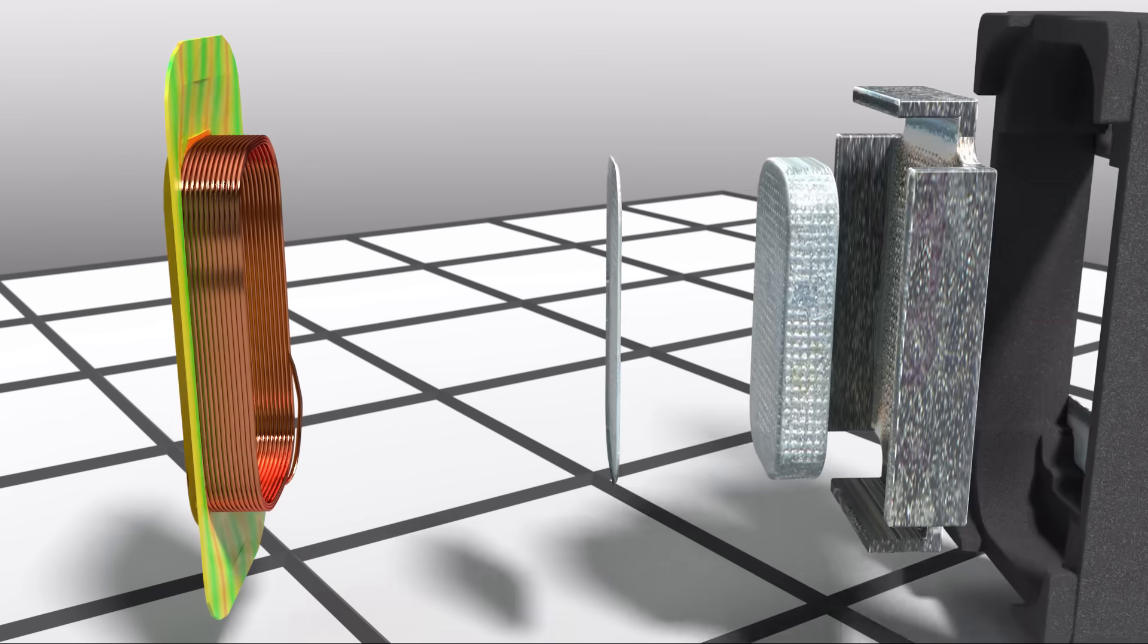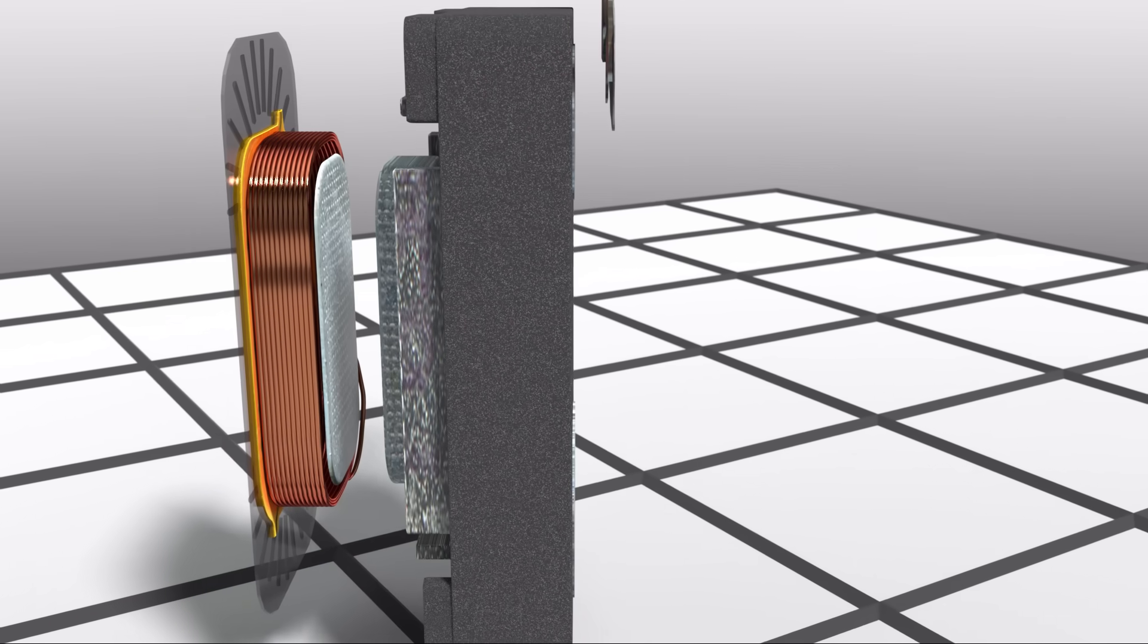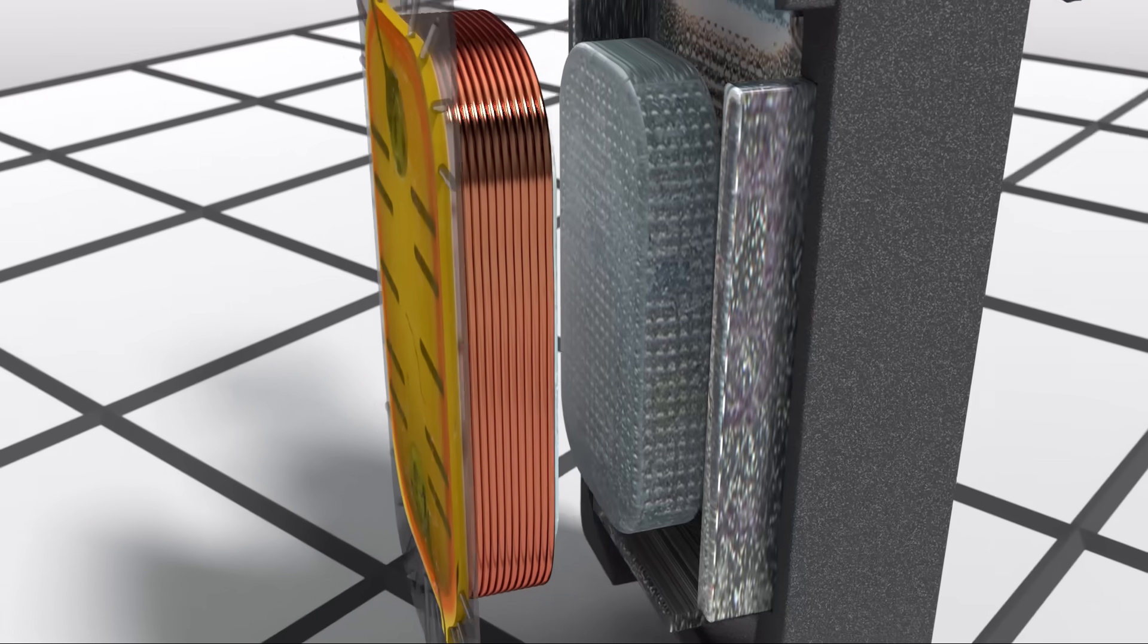If the diaphragm and voice coil weren't stabilized, they could hit the magnets, resulting in both getting damaged.